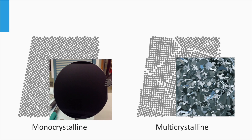At the grain boundaries, we find lattice mismatches. As a result, many defects reside at the grain boundaries. Consequently, the lifetime of charge carriers in polycrystalline silicon is shorter than in monocrystalline silicon due to Shockley-Read-Hall recombination. The more grain boundaries in the material, the shorter the lifetime of the charge carriers.